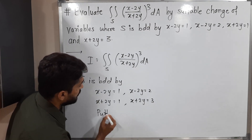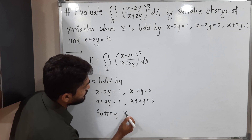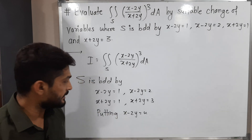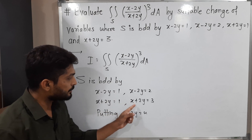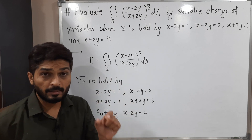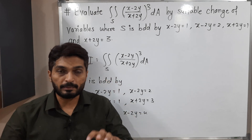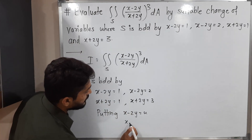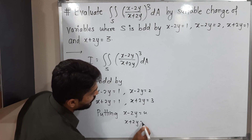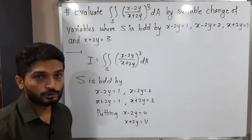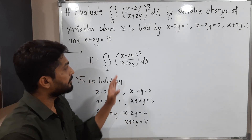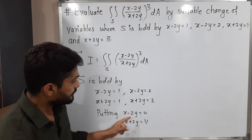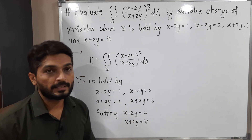Putting x minus 2y equal to u. Similarly, x plus 2y is also repeating three times, so we put x plus 2y equal to v. This is our substitution. With the help of this substitution, we will make this problem more simple and solve it. So x minus 2y = u and x plus 2y = v.